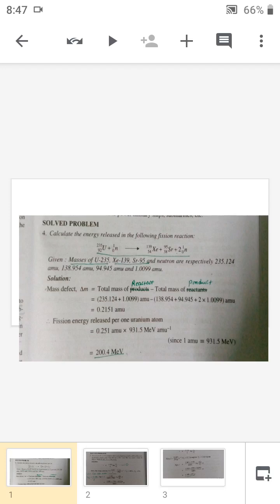Good morning everybody. Today we are discussing the next problems of nuclear chemistry. The first one is to calculate the energy released in the following fission reaction. The reaction is given: uranium-235 plus neutron gives xenon-139 and strontium-95 plus 2 neutrons.